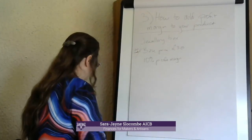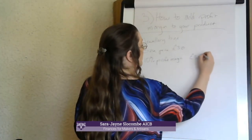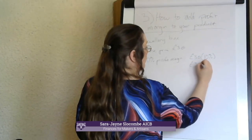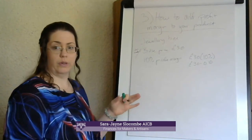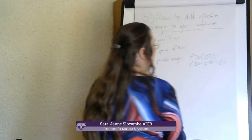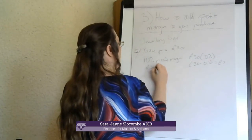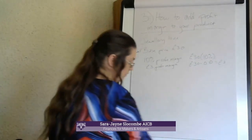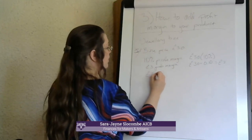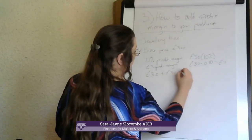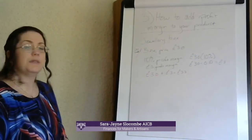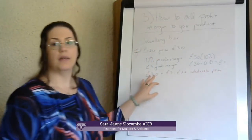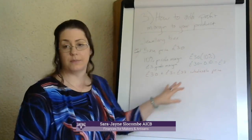So: £30 times 10% — or enter it as £30 times 0.10 in your calculator — gives us a £3 profit margin. So £30 base price plus £3 profit margin gives us £33. Now, this is your wholesale price, and that's where we get to at the end of step two.